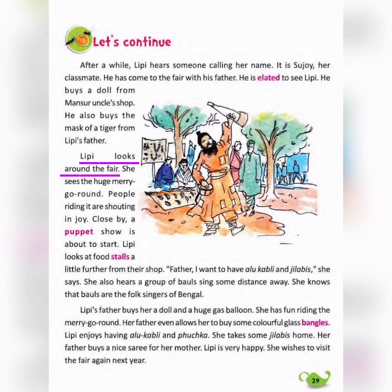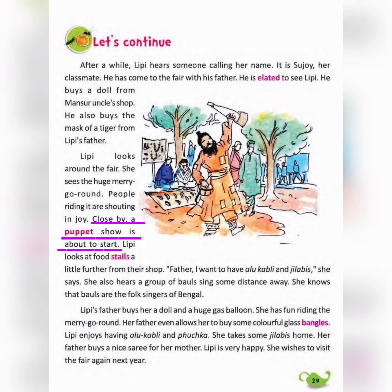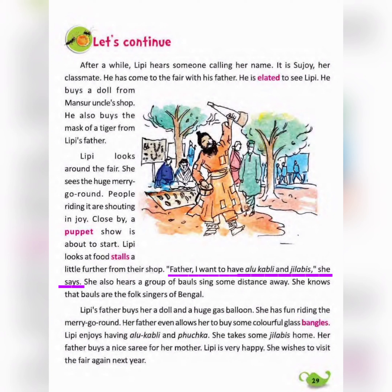Shujoy also buys the mask of a tiger from Lippy's father. Lippy looks around the fair. She sees the huge merry-go-round from their shop. Her father asks what she wants, and she says she wants alukabli and glass beads.